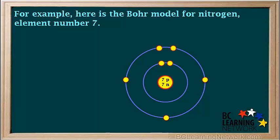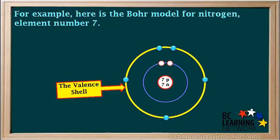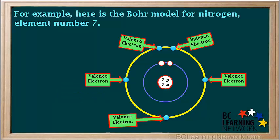For example, here's the Bohr model for nitrogen, element number seven. The outermost occupied shell, or valence shell, is shell number two, as shown by the yellow circle here. And the valence electrons — the electrons in the valence shell — are represented by the blue circles here. Notice that a neutral nitrogen atom has five valence electrons.